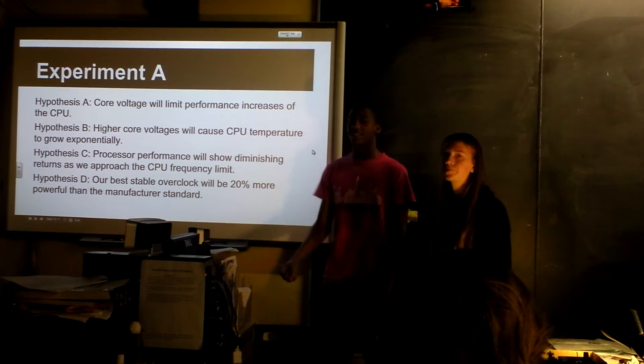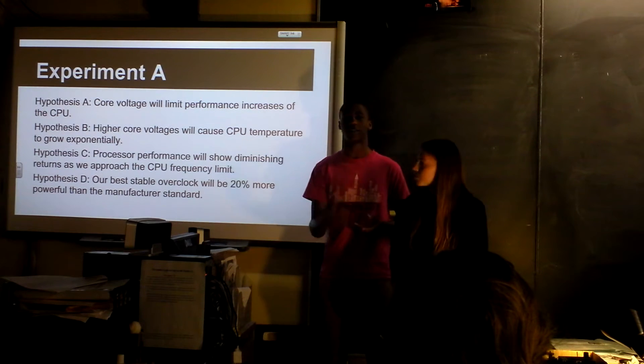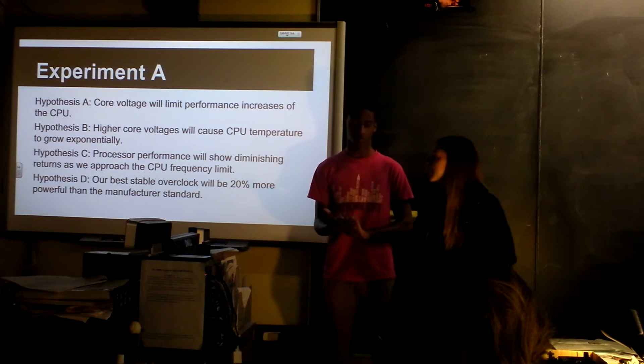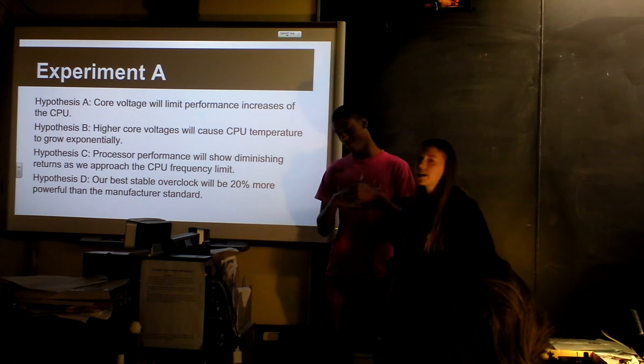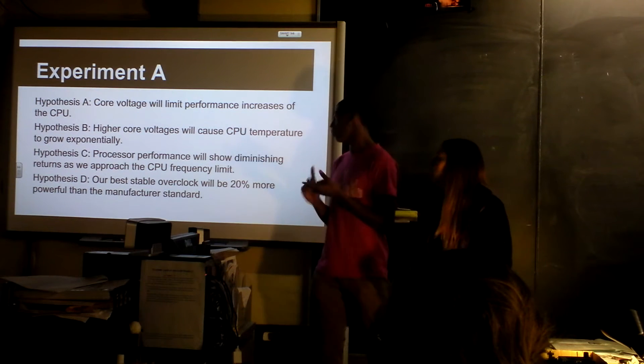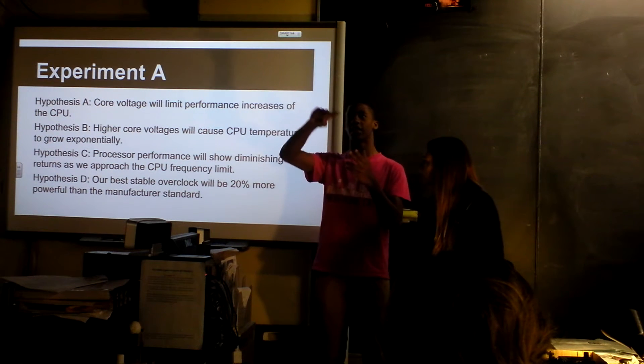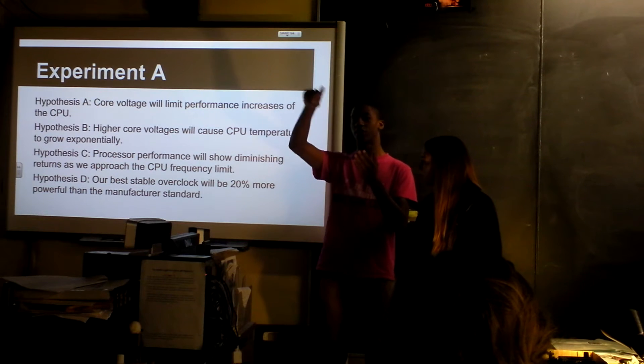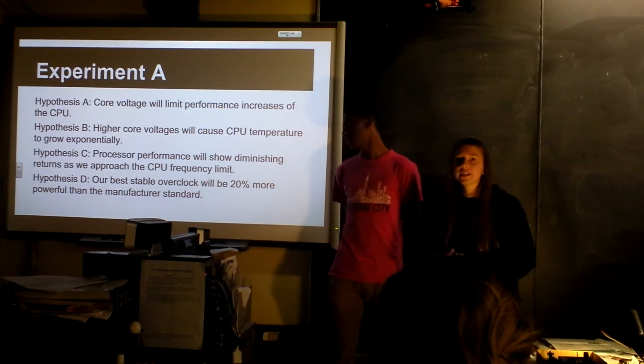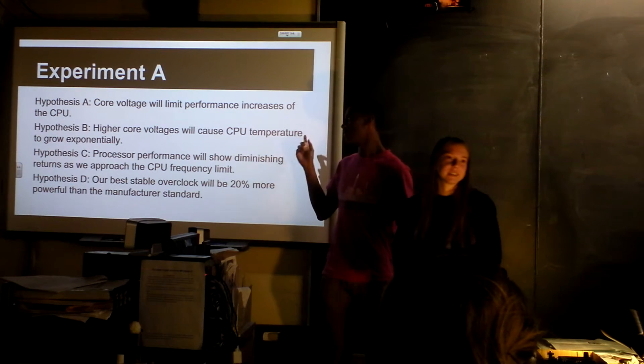So these are all our hypotheses for the processor overclocking. Hypothesis A was that the core voltage will limit performance increases of the processor, so we'll have to increase the voltage as we go up in frequency. Hypothesis B was that the higher core voltages we use, the CPU temperature would grow exponentially. And then we thought that processor performance will show diminishing returns as we reach the physical limit. And our last hypothesis was we thought that we'd be able to get the CPU running at 20% better than the manufacturer had it.